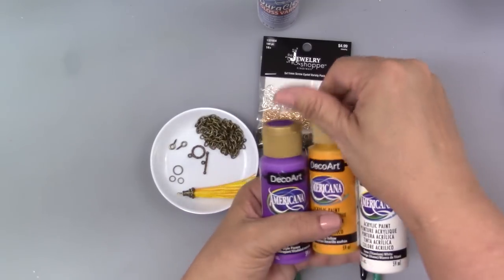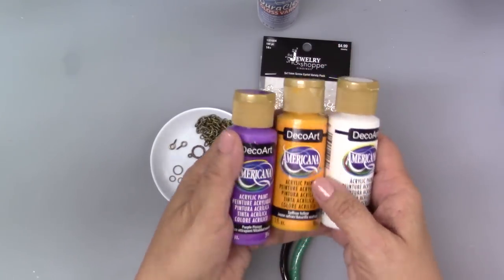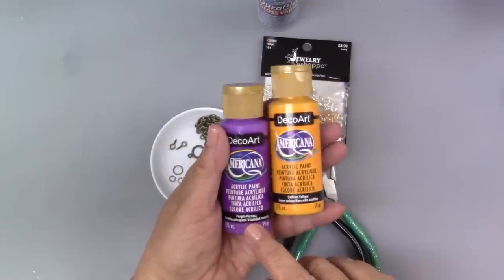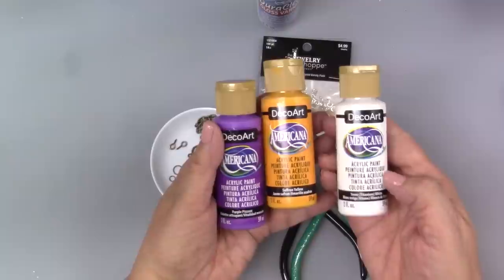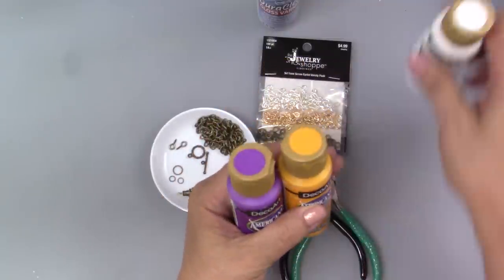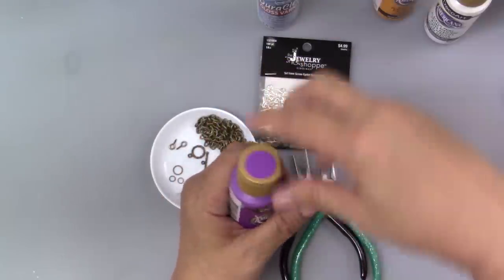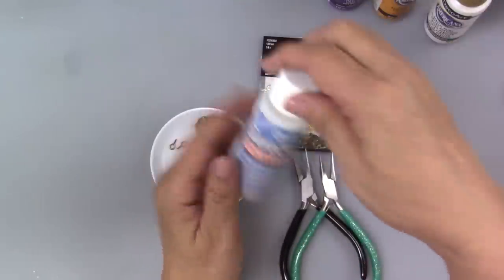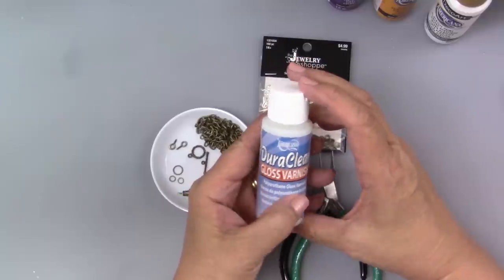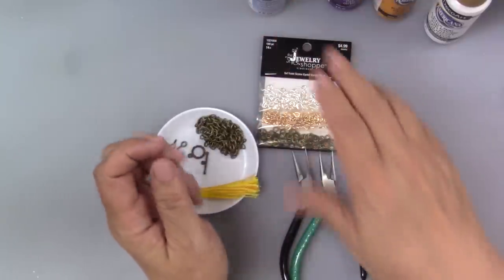I've got the paint that I'll be using: DecoArt Americana in Purple Pizzazz, Saffron Yellow and Titanium White. I've base coated this with the Americana Chalky Paint or the Multi Surface Satin. I'll also be using the DuraClear, the DecoArt Americana DuraClear Gloss Varnish.